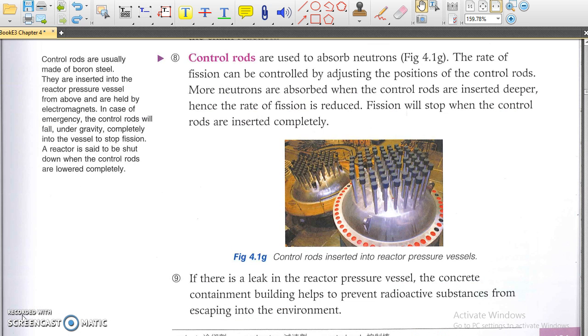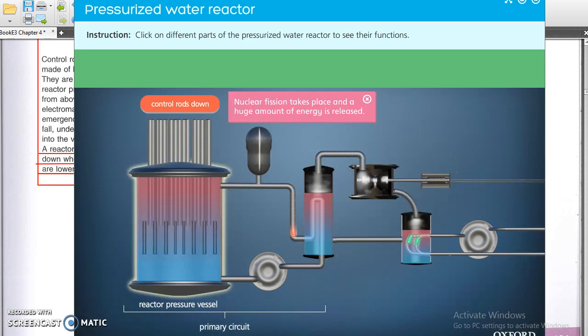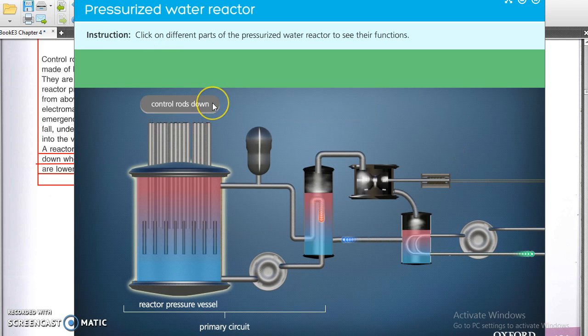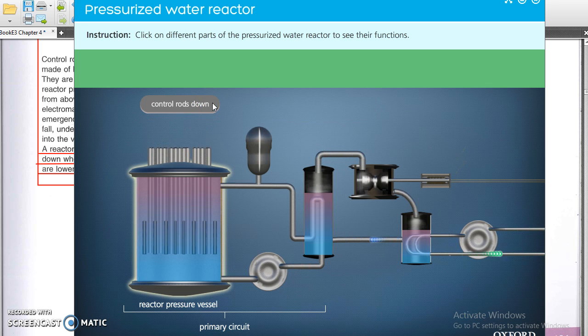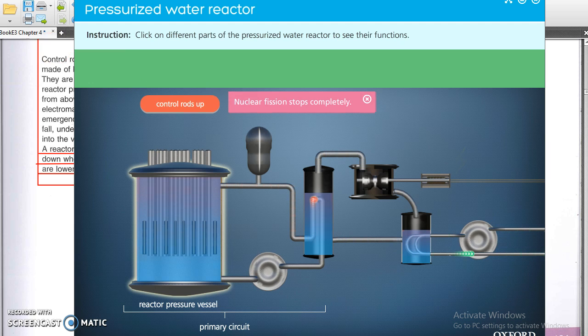To control the rate of fission, control rods, which are made of boron steel, are placed between fuel rods. During emergency, all control rods are inserted in between the fuel rods to absorb all neutrons and shut down the reactor at once.